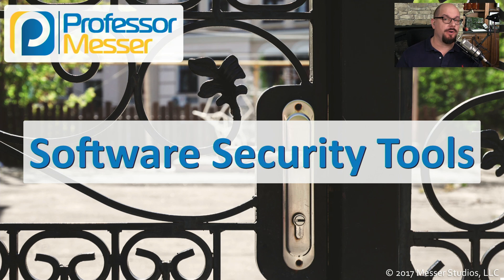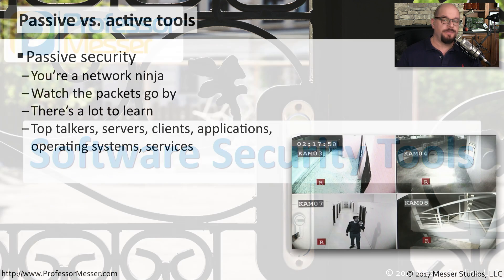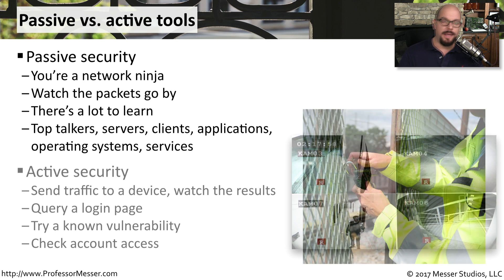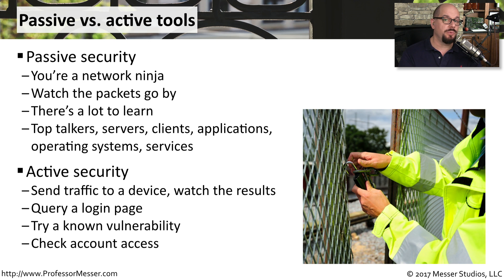If you're working in IT security, there are a number of software tools that you should have in your arsenal. In this video, we'll talk about a number of those tools. Some of them are passive tools, and others work actively. A passive tool is one that watches as network traffic goes by and gives you information about what might be happening inside of the traffic or on a client or server. An active tool will be sending traffic to a device — we may be trying a set of credentials, trying to exploit a known vulnerability, or querying a login page to see if it's active.